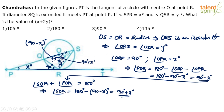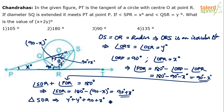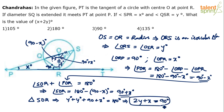Now consider triangle SOR. We know one angle is Y degrees, another is Y degrees, and the third is 90 plus X degrees. So Y plus Y plus (90 plus X) equals 180 degrees, giving us 2Y plus X equals 90. So X plus 2Y equals 90 degrees — option 3 is the final answer.